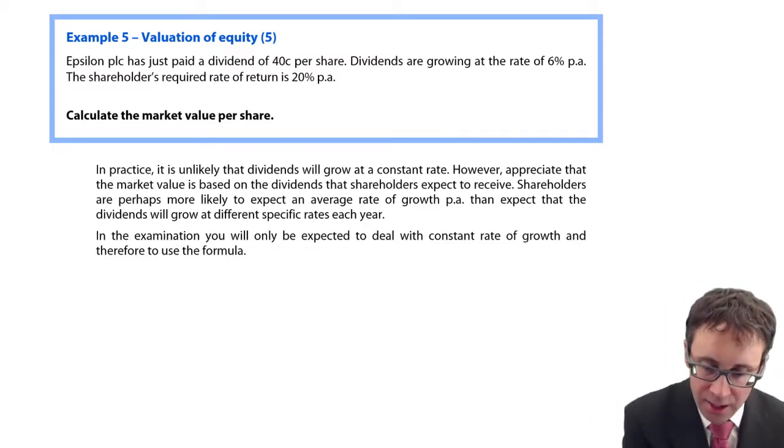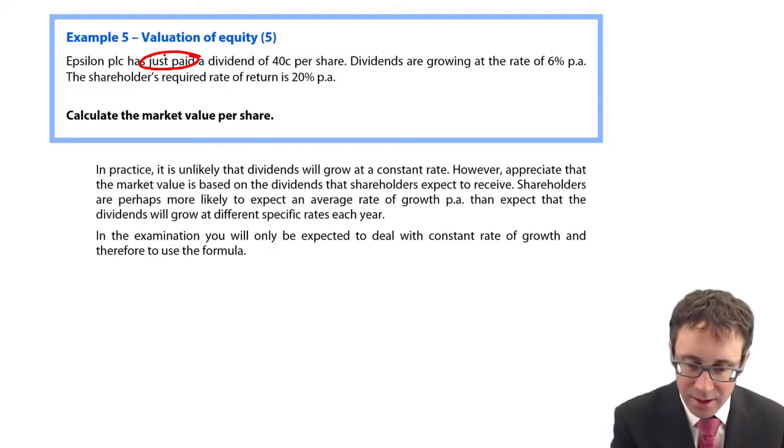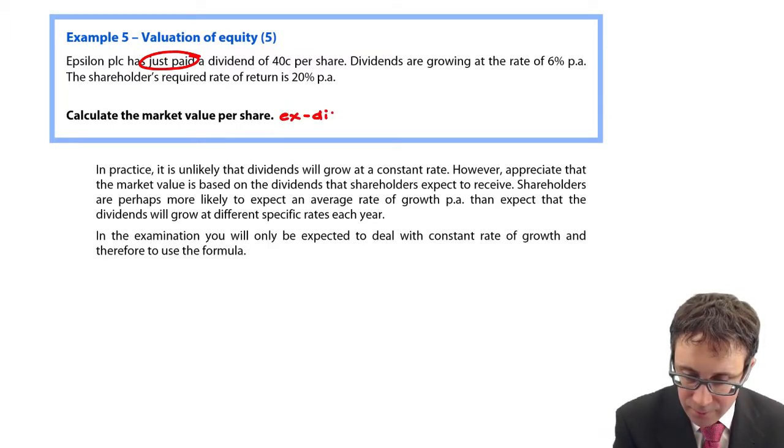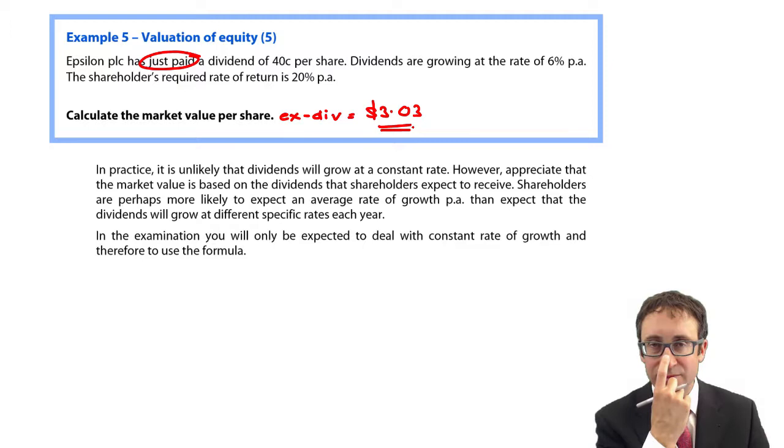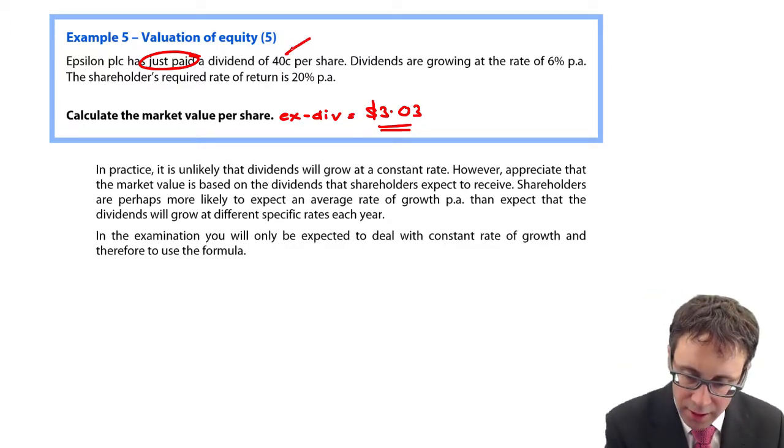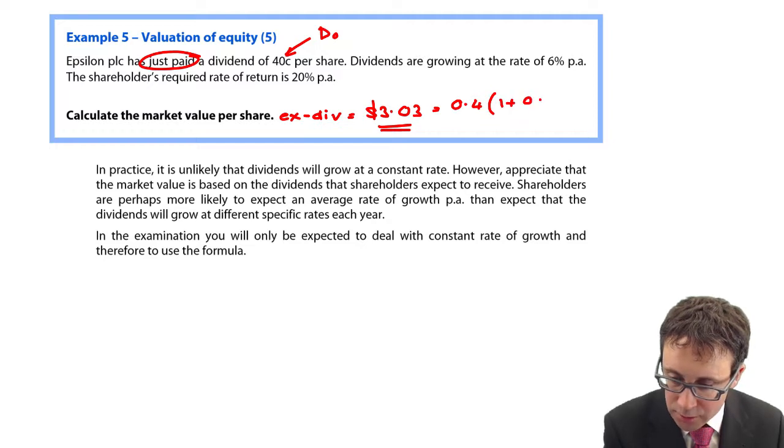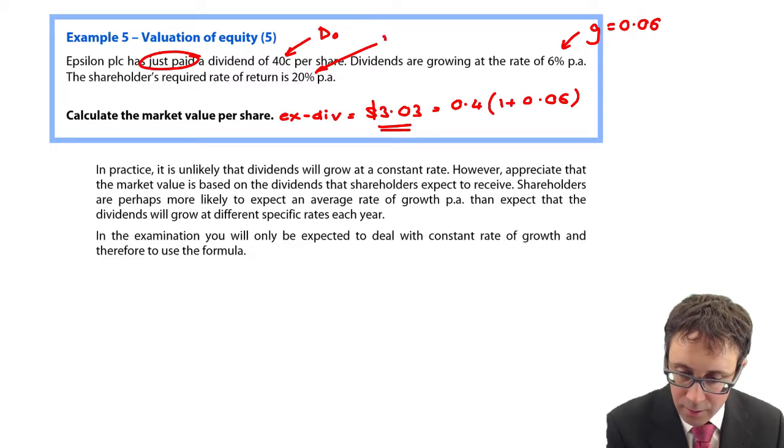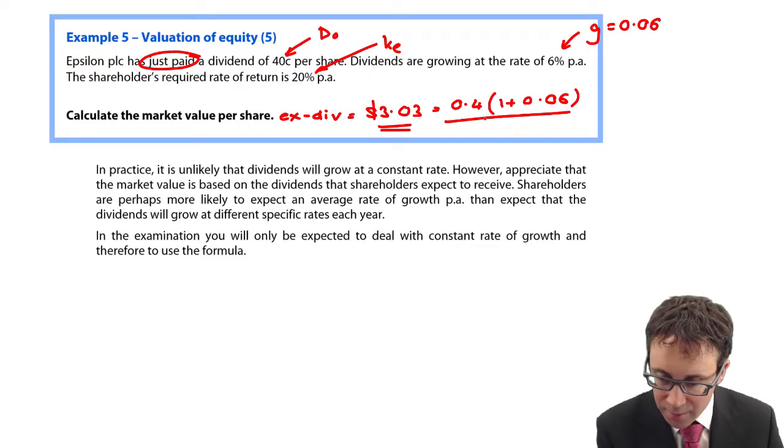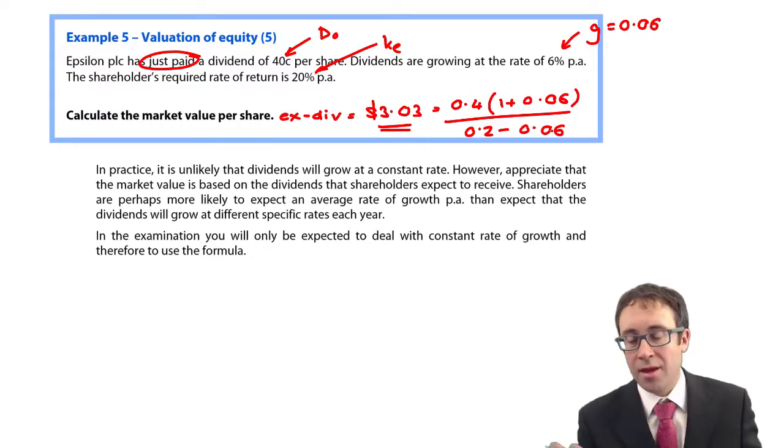We want to calculate the market value per share. If you have just paid the dividend, then you are looking at the ex-div price. And what you should have got there is $3.03. Did you get that? Hopefully you did. You've got your dividend of 0.4. So 0.4 multiplied by 1 plus 0.06 - growth is 6% there - and then we've got ke at 20%. So it's divided by 0.2 less 0.06. Have you got that? Excellent.